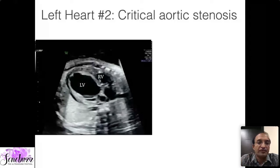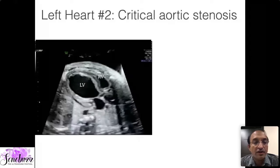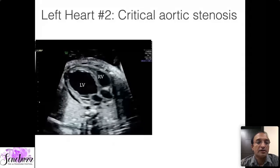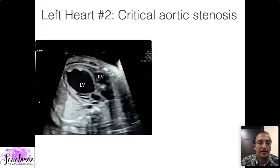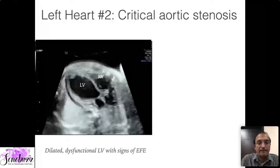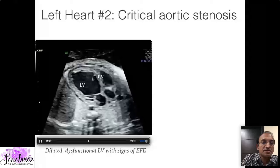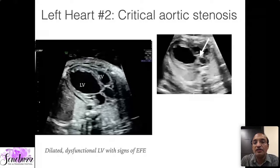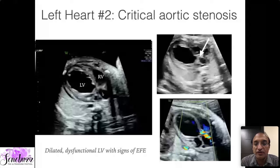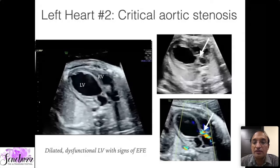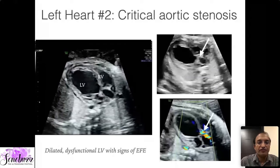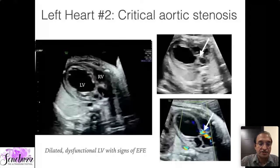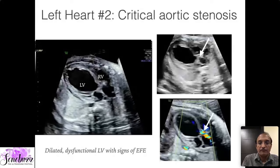Now for aortic stenosis — the left and right ventricles are marked, and in this movie you can see that the left ventricle is quite severely dilated, hardly moving, while the right ventricle contracts well. There are bright patches on the ventricular septum suggesting endocardial fibroelastosis. Looking at the left ventricular outflow tract, there is severe stenosis of the aortic valve with some antegrade flow but the valve is severely stenotic. Some centers perform in-utero intervention with aortic valve dilatation, but that is a very major procedure to be discussed separately.